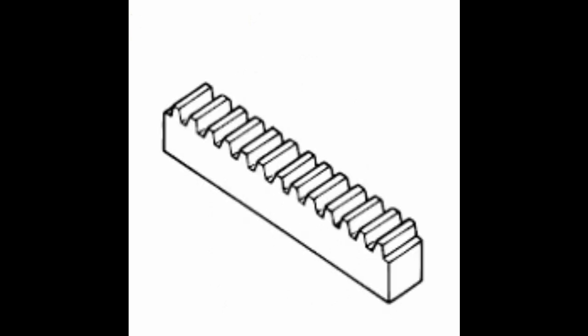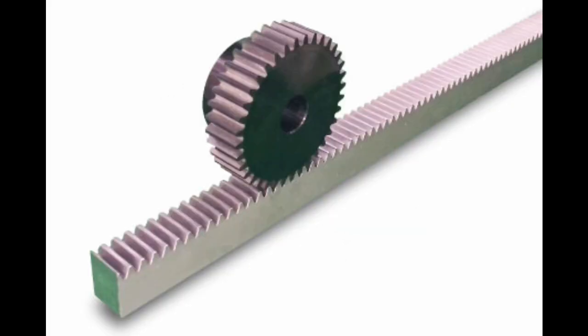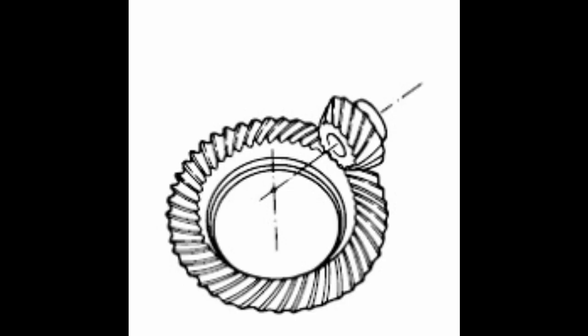A gear rack is a cylindrical gear with the radius of the pitch cylinder being infinite. Same-sized and shaped teeth cut at equal distances along a flat surface or a straight rod is called a gear rack. By meshing with a cylindrical gear pinion, it converts rotational motion into linear motion. Gear racks can be broadly divided into straight tooth racks and helical tooth racks. By machining the ends of gear racks, it is possible to connect gear racks end to end.